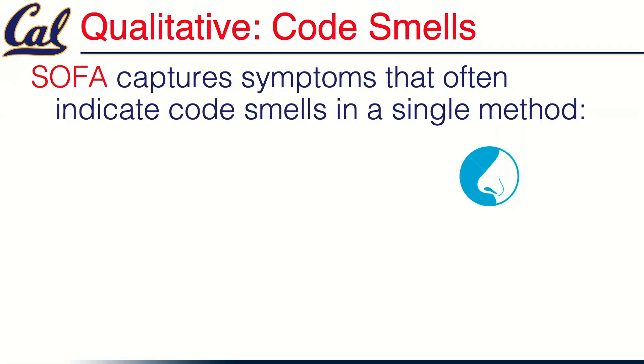SOFA — I couldn't figure out a good way to combine these letters that actually spells anything else. It captures four of the top symptoms that can result in a particular method having code smells. For the moment, we're going to constrain our attention to individual blocks of code like in a method, but we'll also talk about some guidelines that apply when you're looking at the level of entire classes.